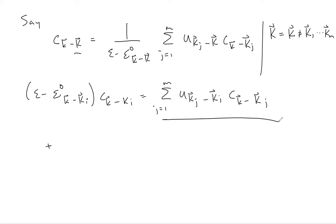This is the term that is not zero this time — which was zero in the non-degenerate case. Already you can see the answer: the energy shift will be first order in U. When we wrote down this equation before, we broke the sum into two parts — one over the set of reciprocal lattice vectors giving the degeneracy, and one over all other reciprocal lattice vectors. We've just derived an expression for those other coefficients, so let's now include this in our equation.